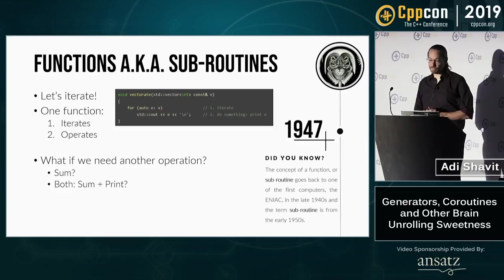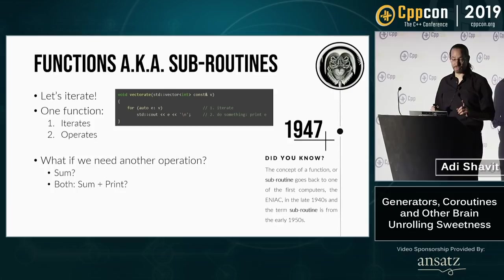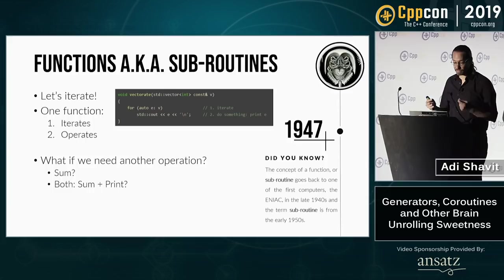Say we want to iterate over all the elements of a vector. We can write a function or subroutine to do that, and we can see that this function actually does two things: it iterates over a sequence, and then it does some operation onto each element of the sequence. If we wanted to apply another operation, we'd have to write another function.